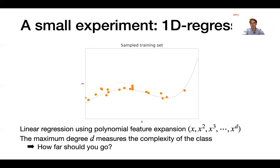If d is small, we only consider low-degree polynomials and the function class is very simple — for example, d=1 gives only a linear function. If d is very large, we consider high-degree polynomials and the function class becomes very complex. The key question is: how far should we go? What is the maximum degree d we should consider?